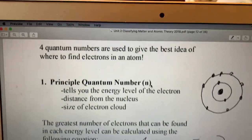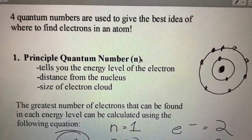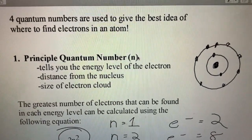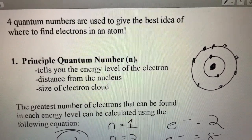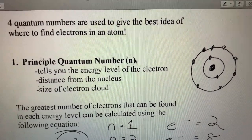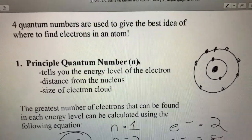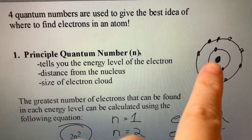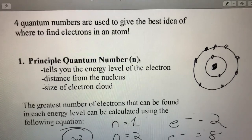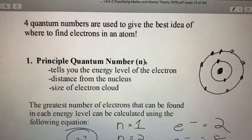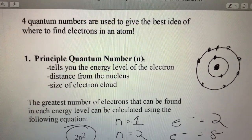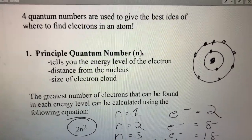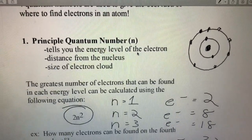First, we have the principal quantum number. This one we're going to use a lot. It tells you what we call the energy level of the electron. Energy levels are a lot like the rings in that Bohr model - it's a distance from the nucleus. If you're in the first energy level, you're closest to the nucleus. If you're in the second, you're getting farther away. It gives you general ideas to the size of the electron cloud. The greater the principal quantum number, if you're in the seventh energy level, that's a pretty large atom.